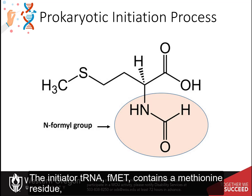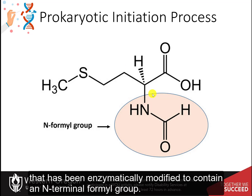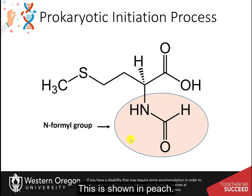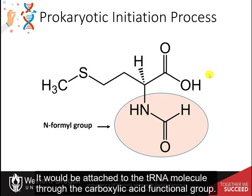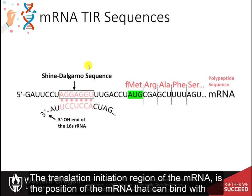The initiator tRNA, fMet, contains a methionine residue that has been enzymatically modified to contain an N-terminal formyl group. This is shown in peach. It would be attached to the tRNA molecule through the carboxylic acid functional group.